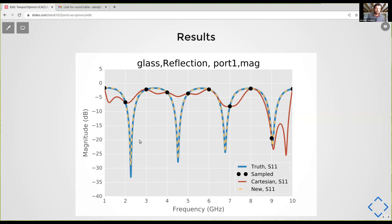So here's some results. This is a reflection coefficient shown in log scale from one to 10 gigahertz. And you can see here in the blue, the blue line is showing the true result. The black dots are showing the sampled result, which is very sparsely sampled. And then the red and the orange dashed lines show the Cartesian, which is kind of default interpolation. And the orange line is the orange dashed line is the spinor version. And you can see here the spinor version is obviously much better.